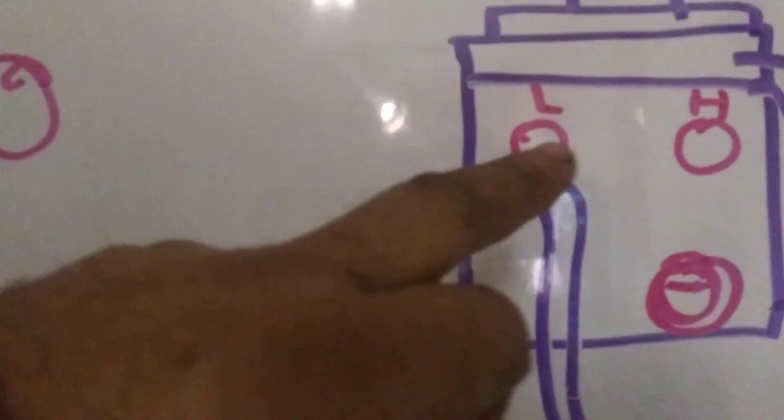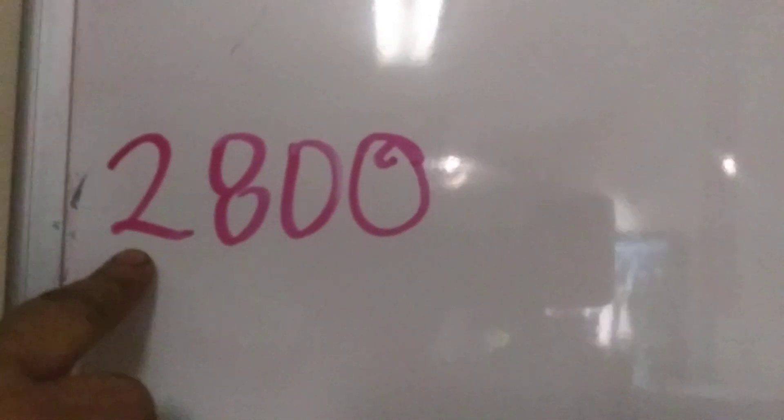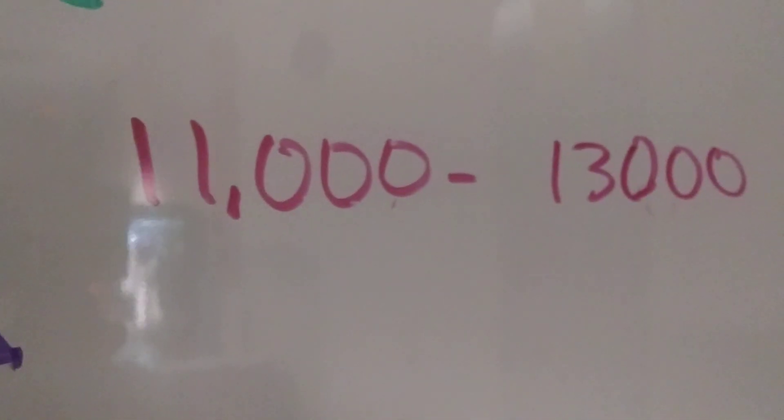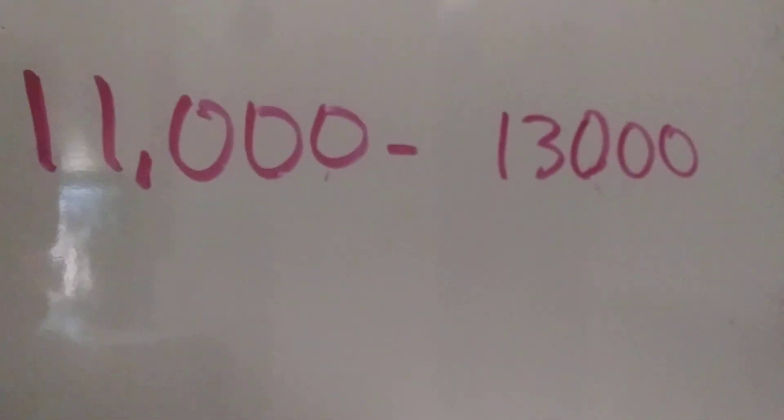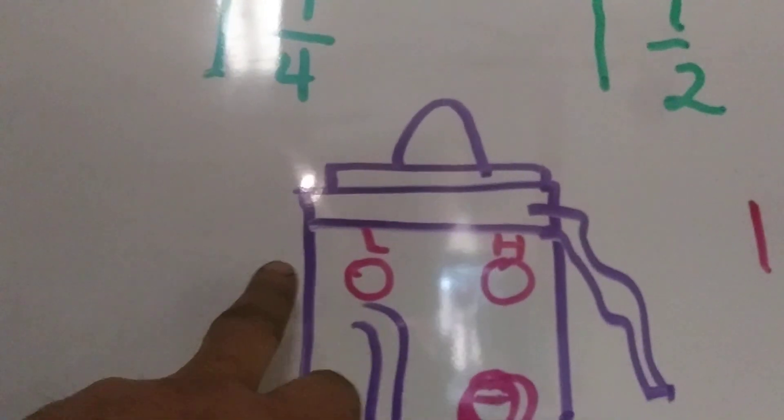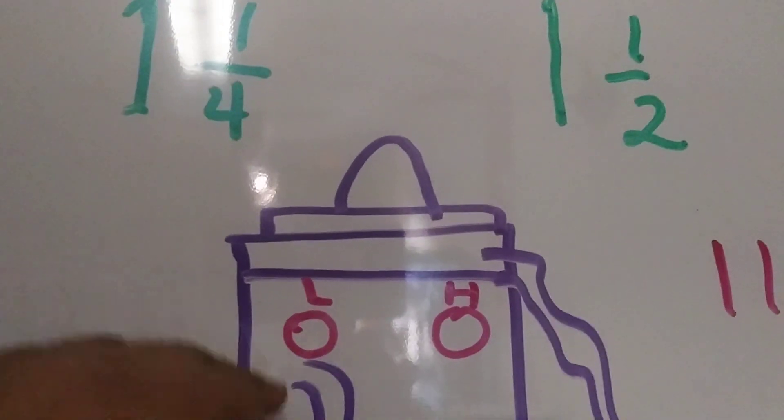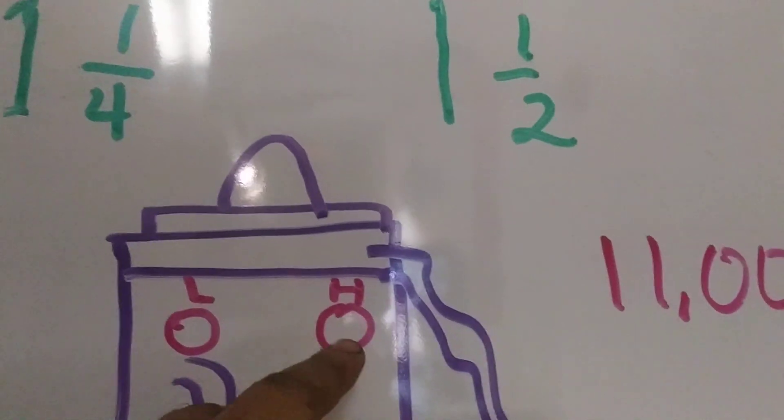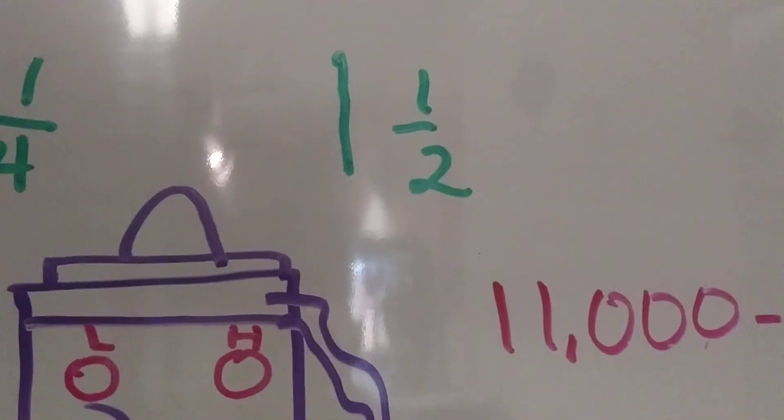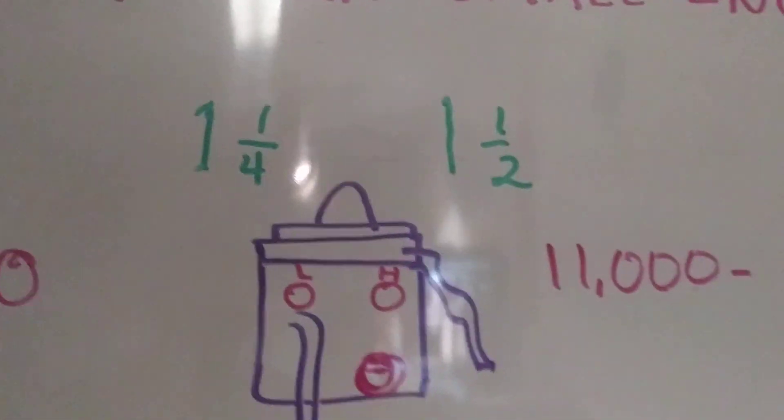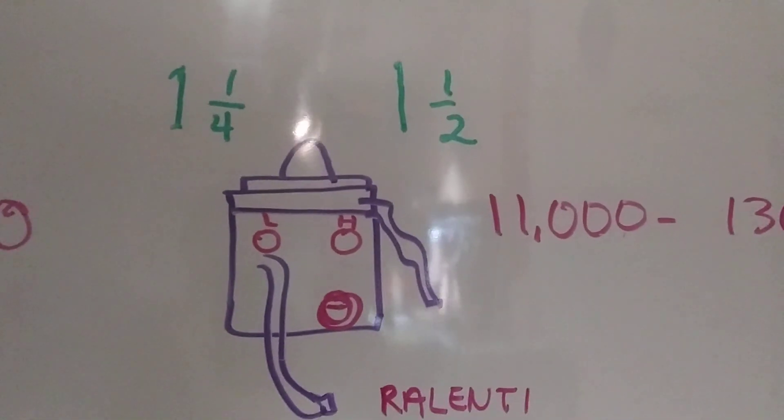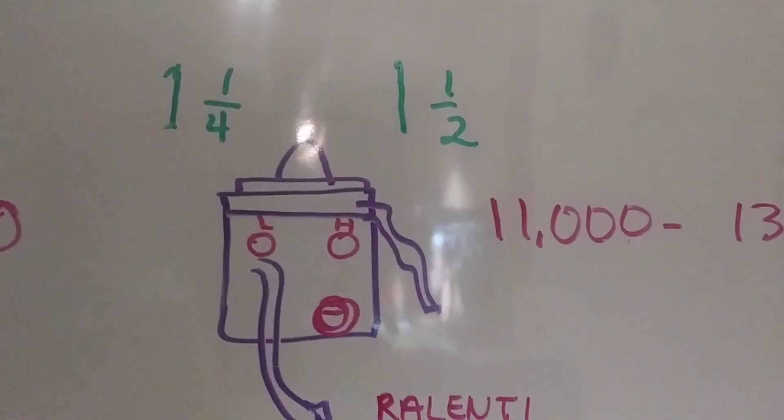The low speed adjustment right here runs around 2,800 RPMs. The high speed adjustment runs between 11,000 RPMs to 13,000 RPMs. Now, the adjustment of the low screw speed runs about one and a quarter, and the high adjustment speed runs around one and a half. What I'm talking about, one and a quarter, one and a half, what does it mean? I'm going to show you on my workbench exactly what I'm talking about.